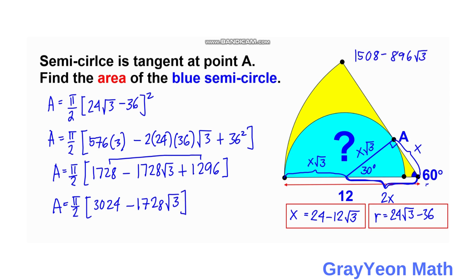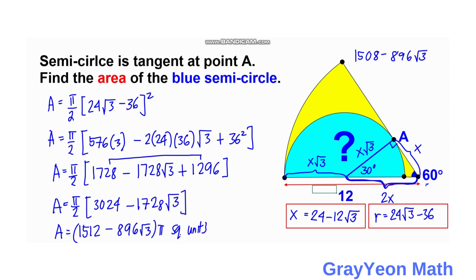Adding 1728 and 1296 gives 3024. Since both 3024 and 1728 are divisible by 2, we divide: Area equals (π/2) × (3024 − 1728√3), which simplifies to (1512 − 864√3)π square units. That is our answer.